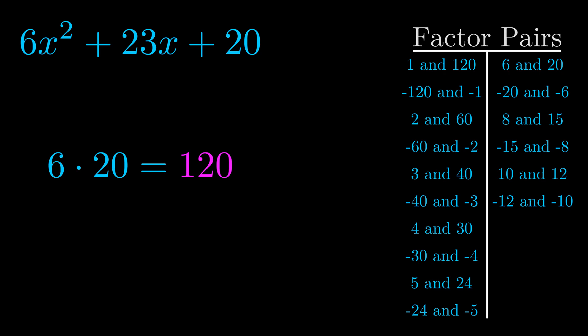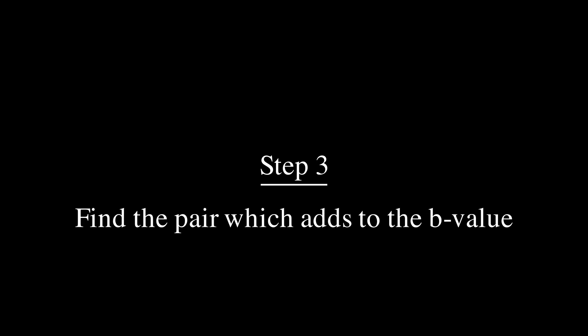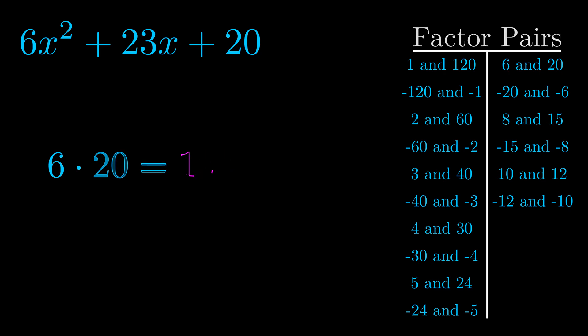Now once you have these factor pairs the goal is to find which of these pairs adds to the b value. The b value is the coefficient on the x term. That's the middle term, the one that we haven't done anything with yet. And really this is the only factor pair that we need.